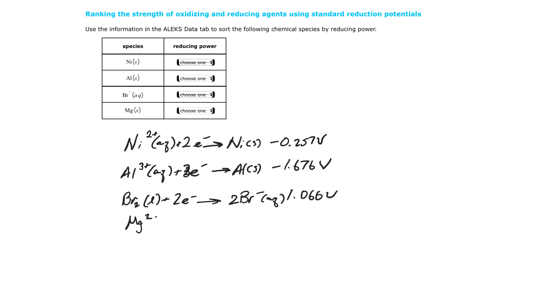plus 2 electrons, yields magnesium metal, and it was negative 2.372. Notice that everything I'm asked for, the nickel, the aluminum, the bromine, and the magnesium, are not at the beginning, but actually here. So in this piece of data, it's actually backwards.